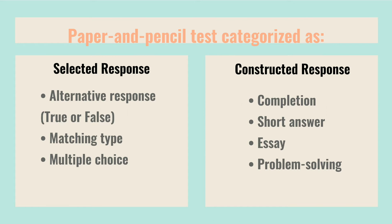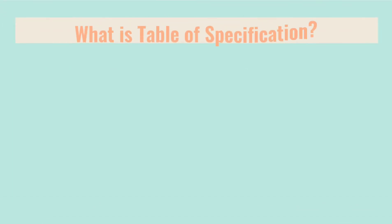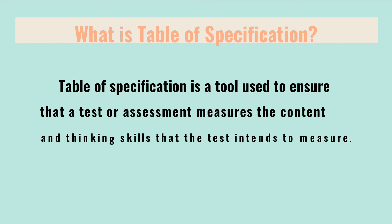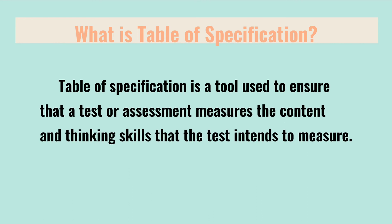Before we go to our main focus, we have to know how to prepare a table of specification or TOS before constructing a test. The table of specification, or TOS, is a tool used to ensure that a test or assessment measures the content and thinking skills that the test intends to measure. When used appropriately, it can provide content and construct validity evidence. A TOS may be used for large-scale test construction, classroom-level assessments by teachers, and psychometric scale development. It is a foundational tool in designing tests or measures for research and educational purposes.